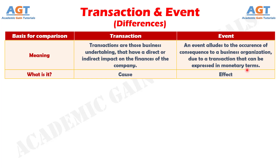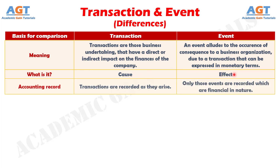Number two: while transactions are the deliberate acts performed by the business entities, events are the results of the transactions. Number three: in accounting, all the transactions are recorded as and when they take place, whereas only those events are recorded in the books of accounts which are financial in nature.